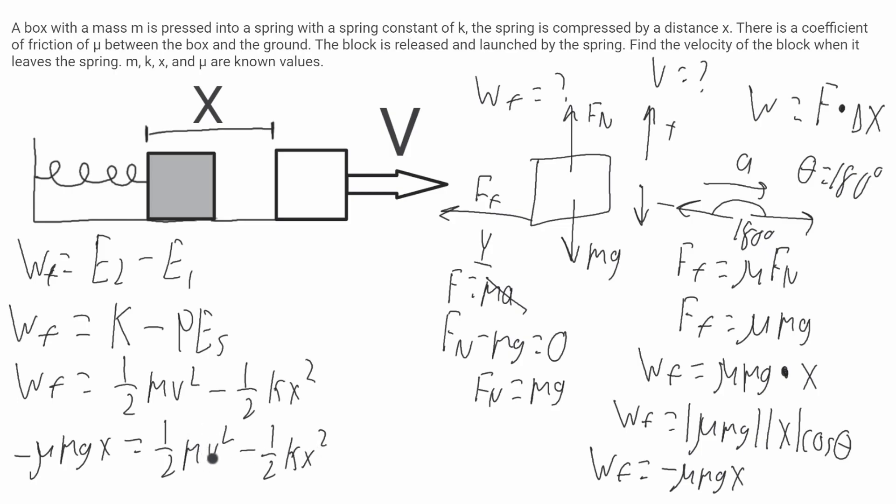Since I'm solving for v, I'll get this term by itself on one side. I'll start by making myself some room over here. I'll get 1/2 mv squared is equal to 1/2 kx squared minus mu mg x.